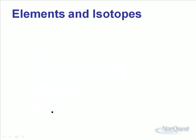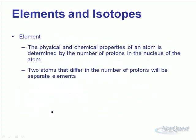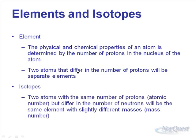The physical and chemical properties of an atom are determined by the number of protons in the nucleus. Two atoms that differ in their number of protons are separate elements — this is how you move down the periodic table. Isotopes are two atoms with the same number of protons (same atomic number) but a different number of neutrons, so they have slightly different masses — their mass numbers are different.